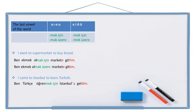I came to Istanbul to learn Turkish: Ben Türkçe öğrenmek için İstanbul'a geldim. I could write the same sentence like this too: Ben Türkçe öğrenmek üzere İstanbul'a geldim. Both sentences are correct and they are the same.